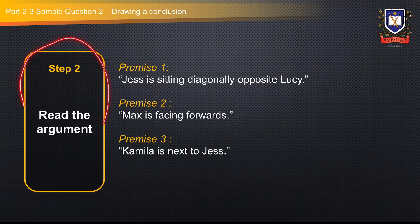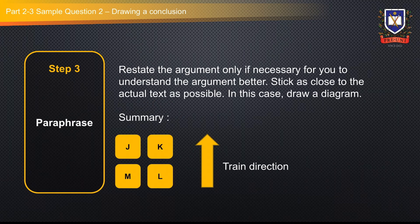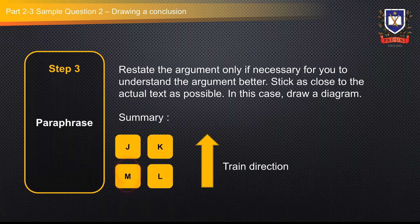Applying the general approach: the next step is to read the argument and identify the premises. The first premise is Jess is sitting diagonally opposite Lucy. The second premise is Max is facing forwards. The third premise is Camilla is next to Jess. Step three is to paraphrase — in this case, we summarise the argument by drawing a diagram. We define the forwards direction with an arrow going upwards. Jess is in the top left corner, Camilla in the top right corner, Max in the bottom left corner, and Lucy in the bottom right corner.